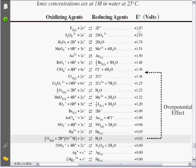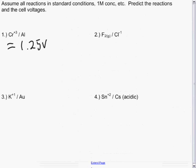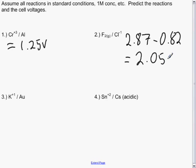So, fluoride is plus 2.87 minus 0.82 for the water reaction. You would actually get fluoride being created at one electrode and oxygen gas at the other electrode. So, 2.07 minus 0.82, 2.05 volts.